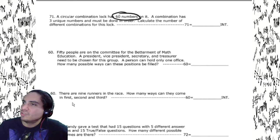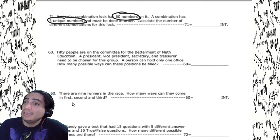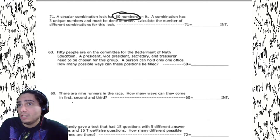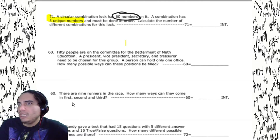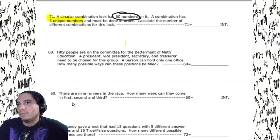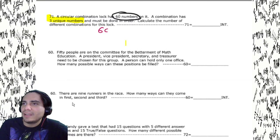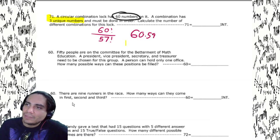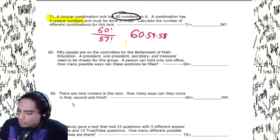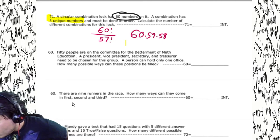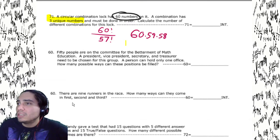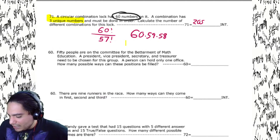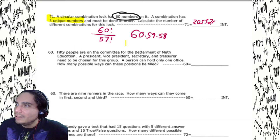A circuit combination lock has 60 numbers on it, and the combination has three unique numbers — unique meaning no repetition, and there must be an order. So we've got 60! / (60−3)! = 60! / 57!, which is 60 × 59 × 58. It is an integer problem — hit yellow show — and we get 205,320.